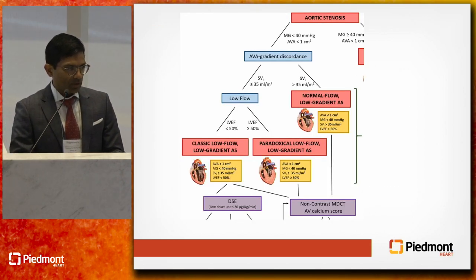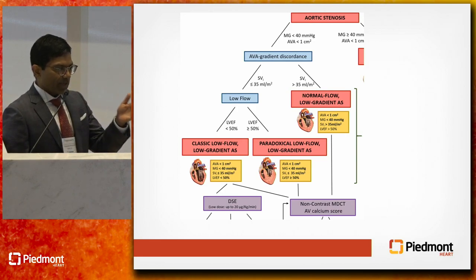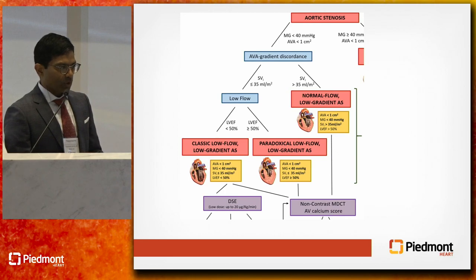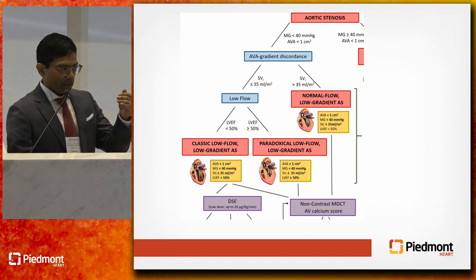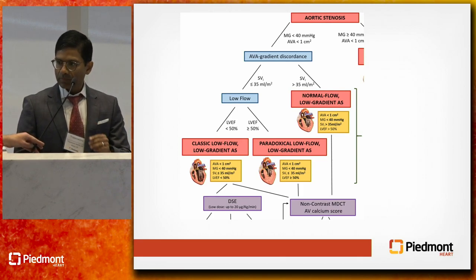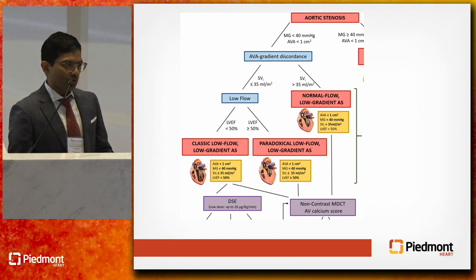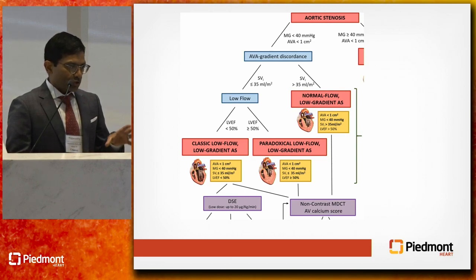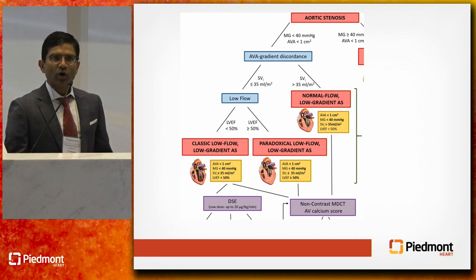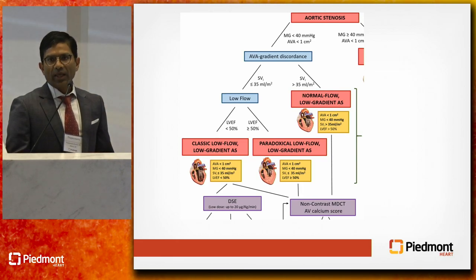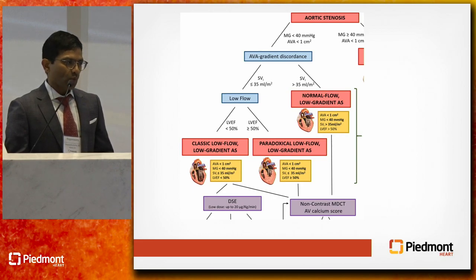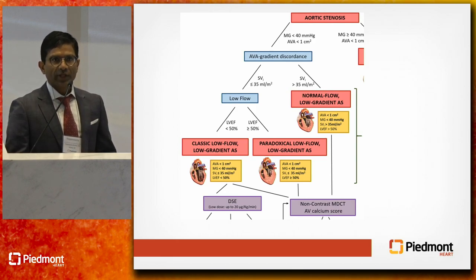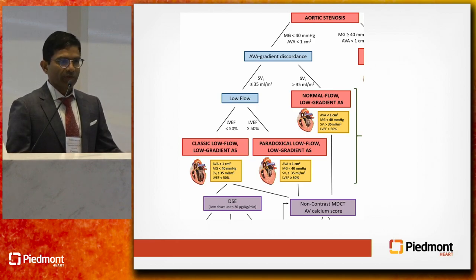The definition of classical low flow, low gradient: valve area is less than one, mean gradient is less than 40, stroke volume index is less than 35, and EF is less than 50. For that patient, the guidelines recommend a dobutamine stress echo. The protocol starts at 5 micrograms and goes up by 5 micrograms to a maximum of 20. What we're looking to see is whether the gradient becomes greater than 40 with the valve area remaining less than one. You do dobutamine stages at 5, 10, 15, 20 until that threshold is reached.